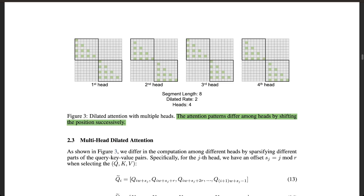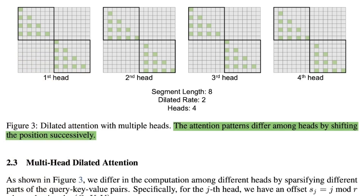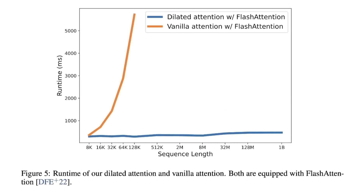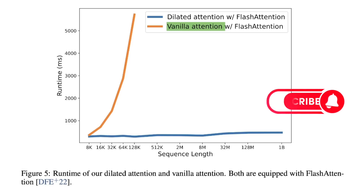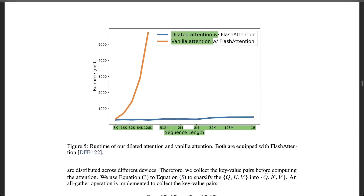If you want to look at different parts of the sequence, you can use something called multi-headed dilated attention. In that case, you successively shift the position and start paying attention to different parts of the sequence. Looking at another plot: for vanilla attention, the runtime requirements increase exponentially as you increase the context window length. However, for dilated attention, it remains pretty linear — that's why the runtime and computational complexity is not as high as a vanilla transformer implementation.